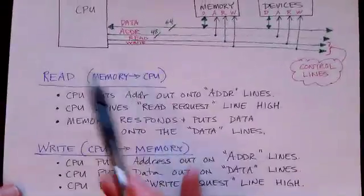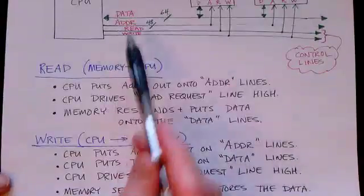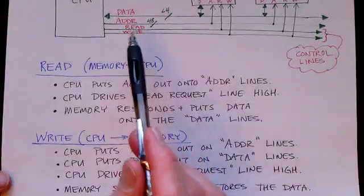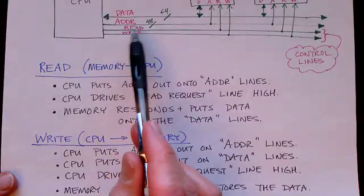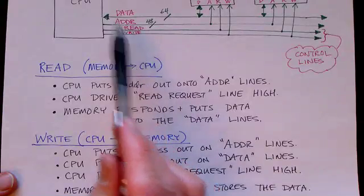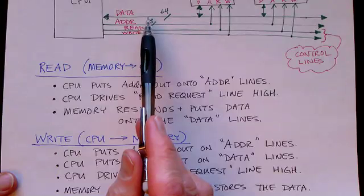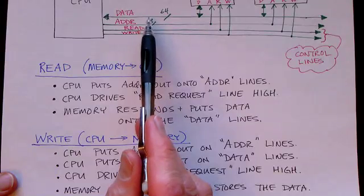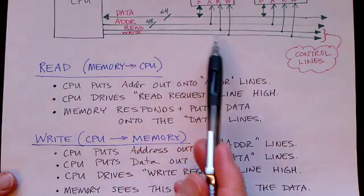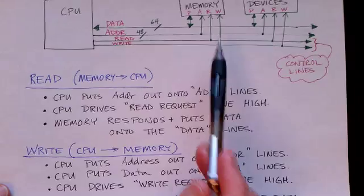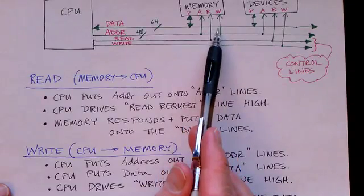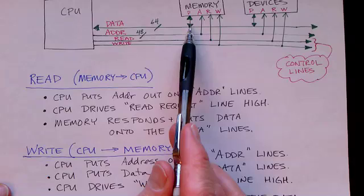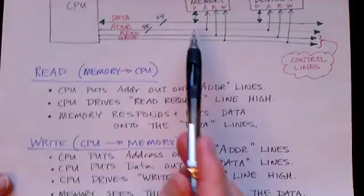In the case of a write where the CPU wants to send data to the memory, the CPU puts an address out. It also puts the data that it wants to write out at the same time on the data lines, and it drives the write control line high. The memory sees the address, it sees the write command, so it picks up the data off of the data lines and it stores it in its memory.